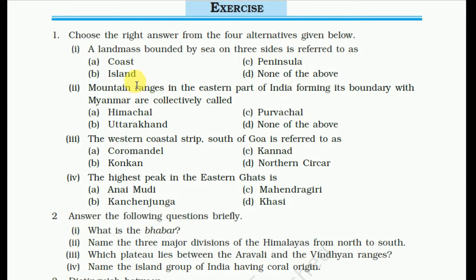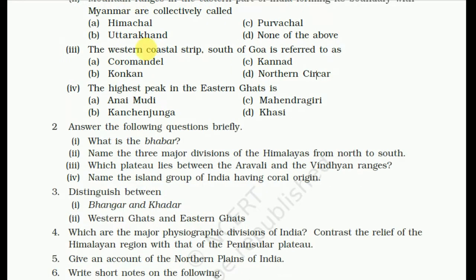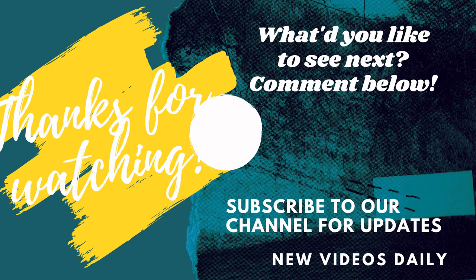This chapter is now complete. A quick review: a landmass bounded by sea on all three sides is referred to as a peninsula — so India is also known as a peninsula. Mountain areas in the eastern part of India forming its boundary with Myanmar are collectively called Purvanchal. The western coastal area south of Goa is known as the Malabar Coast. Thank you for watching this video — if you have any suggestions, please comment below. Please like, share, and subscribe. Bye bye.